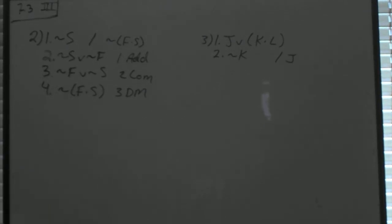Number 3, we've got J or K and L, not K, therefore J. And this one is one of those where I think there's a much easier solution than they want you to do. I would just simplify line 1, make it J or K, and then J or K, not K, therefore J through disjunctive syllogism and you're done.